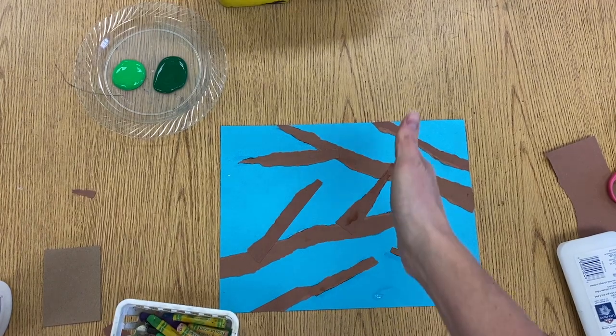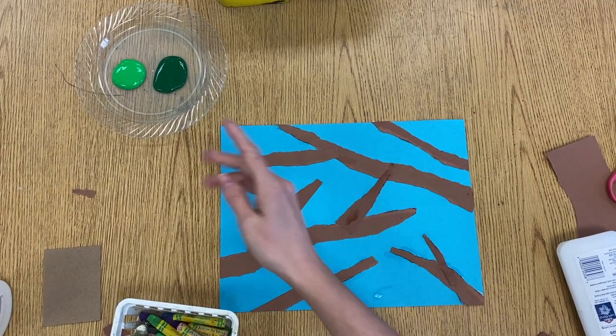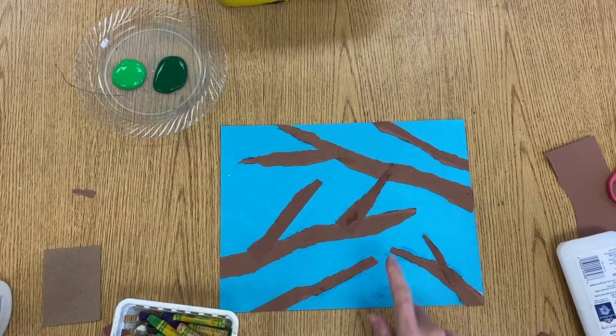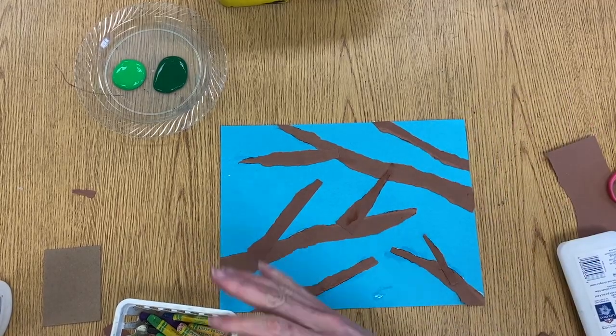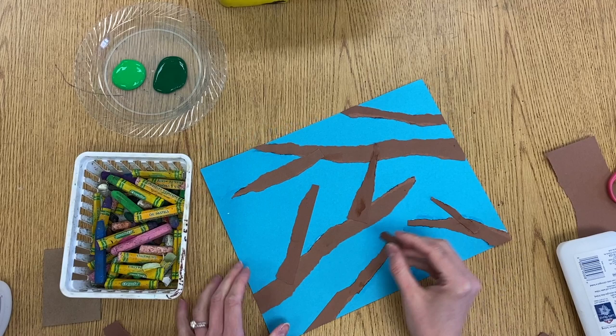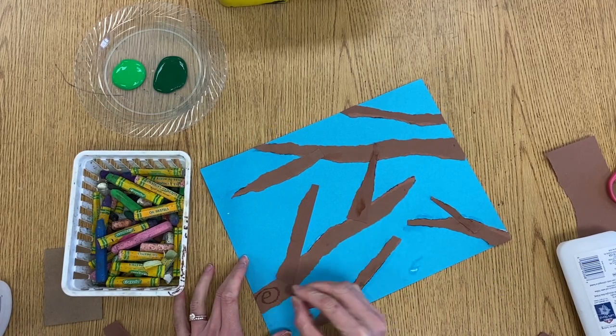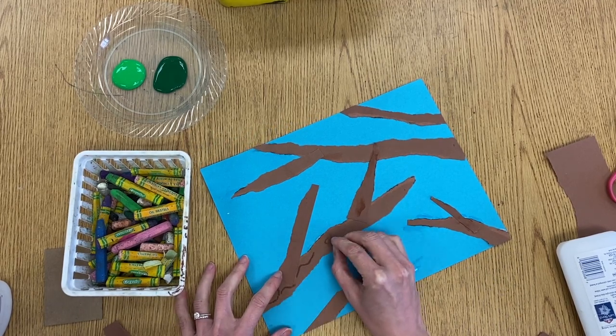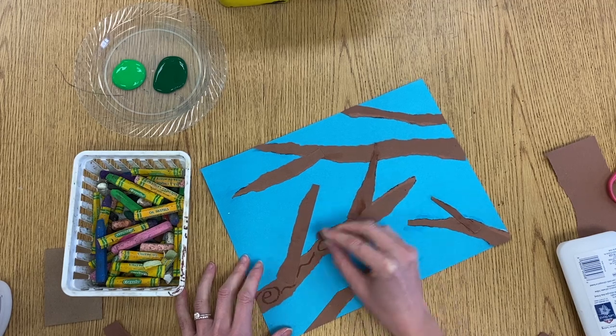So before we add our evergreen needles with our paint, we're going to add a little bit of texture to these branches to make them look more natural. So you're going to find a brown oil pastel and you can make little swirly lines and wavy lines to create the tree texture.